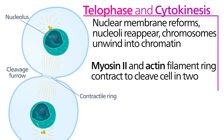As for cytokinesis, cytokinesis is the stage where the cell separates into two identical daughter cells. This is the stage after the whole process of mitosis.